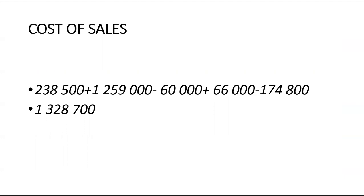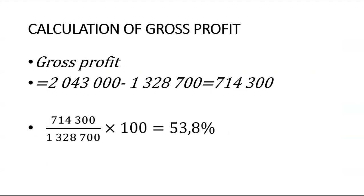To calculate the markup, first find your gross profit: gross profit equals sales minus cost of sales. Sales was $2,043,000 and cost of sales was $1,328,700, giving a gross profit of $714,300. When you divide gross profit by cost of sales, it gives you a markup of 53.8%.